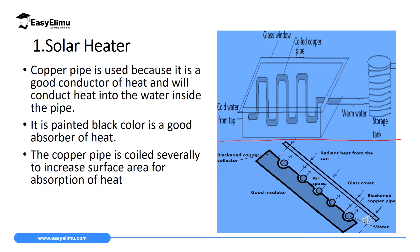We will start with the solar heater. It's important to note the parts of a solar heater — the first diagram shows the main parts and the second shows the cross-section. The main components include a coiled copper wire, which you can see traced here, coiled several times to increase the surface area in contact with radiant heat from the sun, maximizing heat absorption.